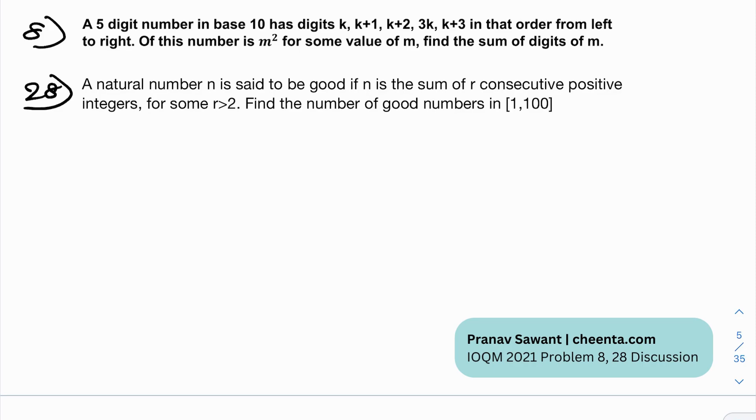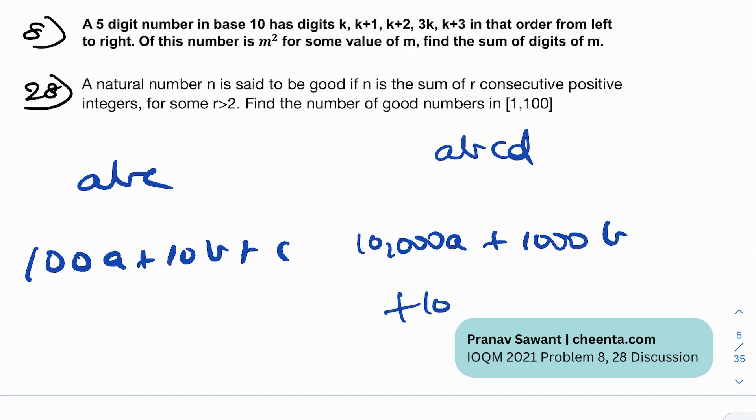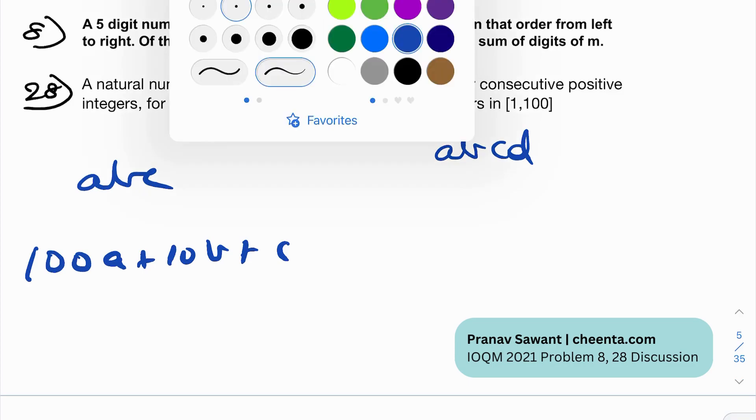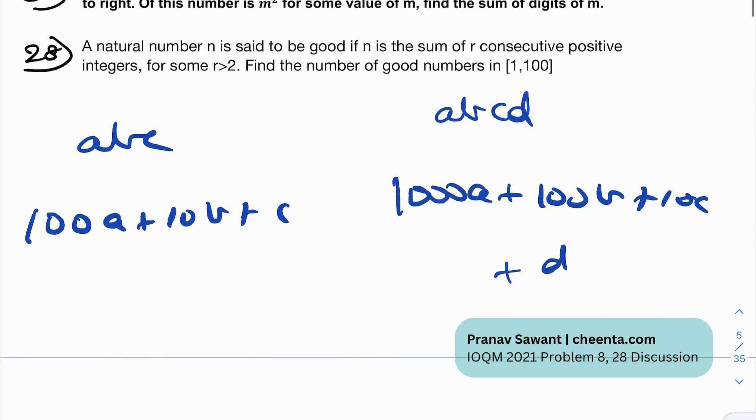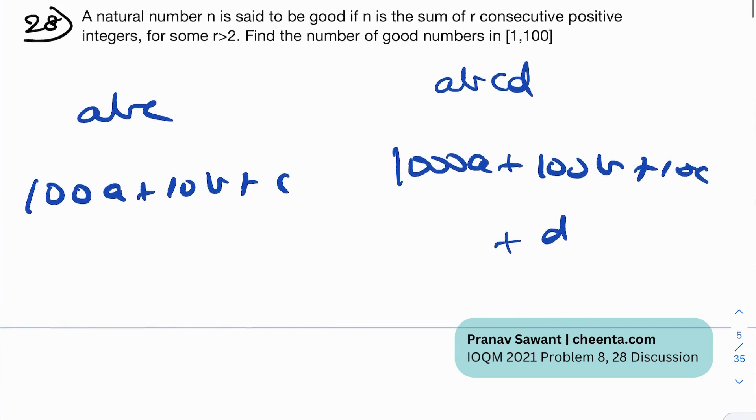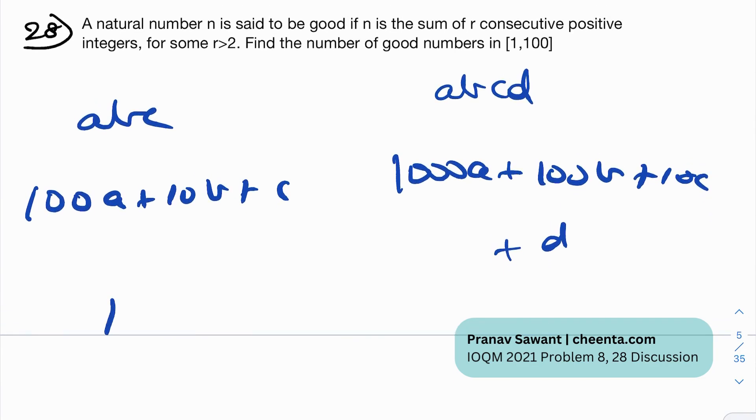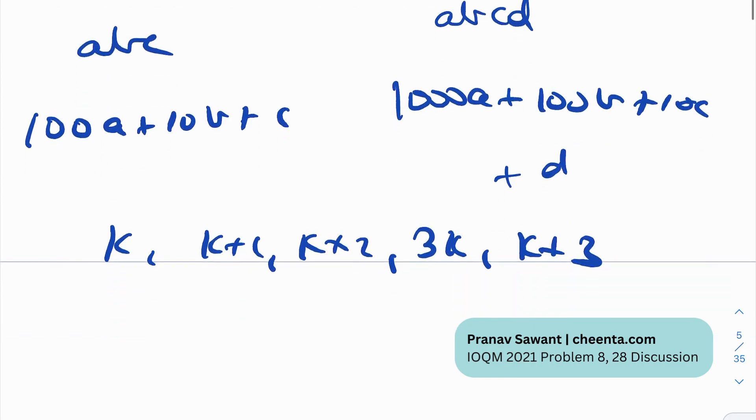So what are they saying? It's a five-digit number in base 10. So base 10 is the regular system. For example, if I write a number ABC in base 10, this is represented as 100A plus 10B plus C. If I write a number ABCD in base 10, the decimal system, this will be 1000A plus 100B plus 10C plus D. But you get the point. So this is how we represent a number in the decimal format, in base 10. And they're telling us that a five-digit number in base 10 has these digits, so k, k plus one, k plus two, then we have three k and k plus three. So these are the five digits from left to right.